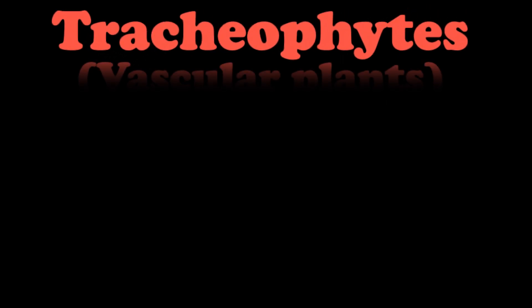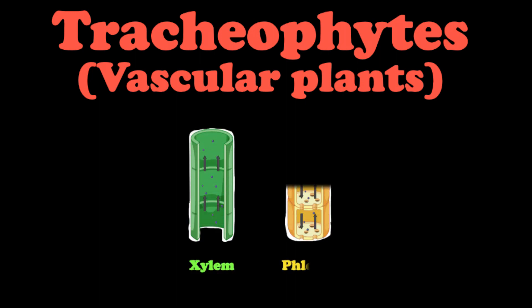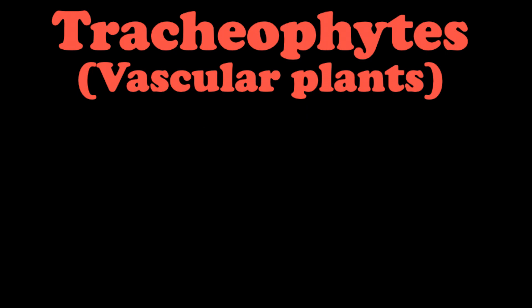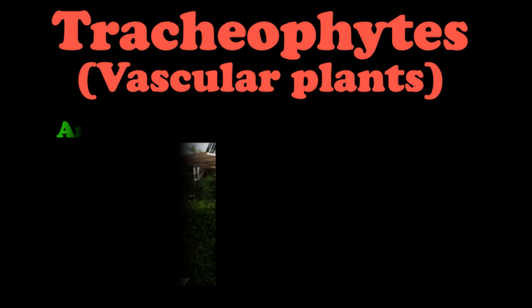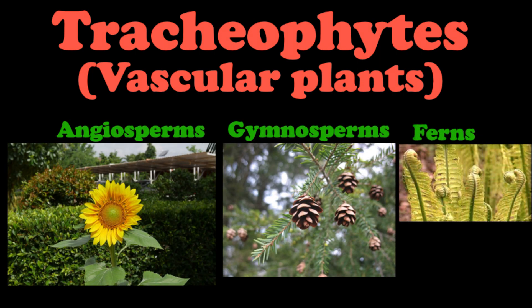These tracheophytes, or vascular plants, get their name from the vascular tissue they possess — xylem and phloem — basically plant arteries that conduct water and nutrients internally throughout the plant. The tracheophytes consist of angiosperms, gymnosperms, and ferns.